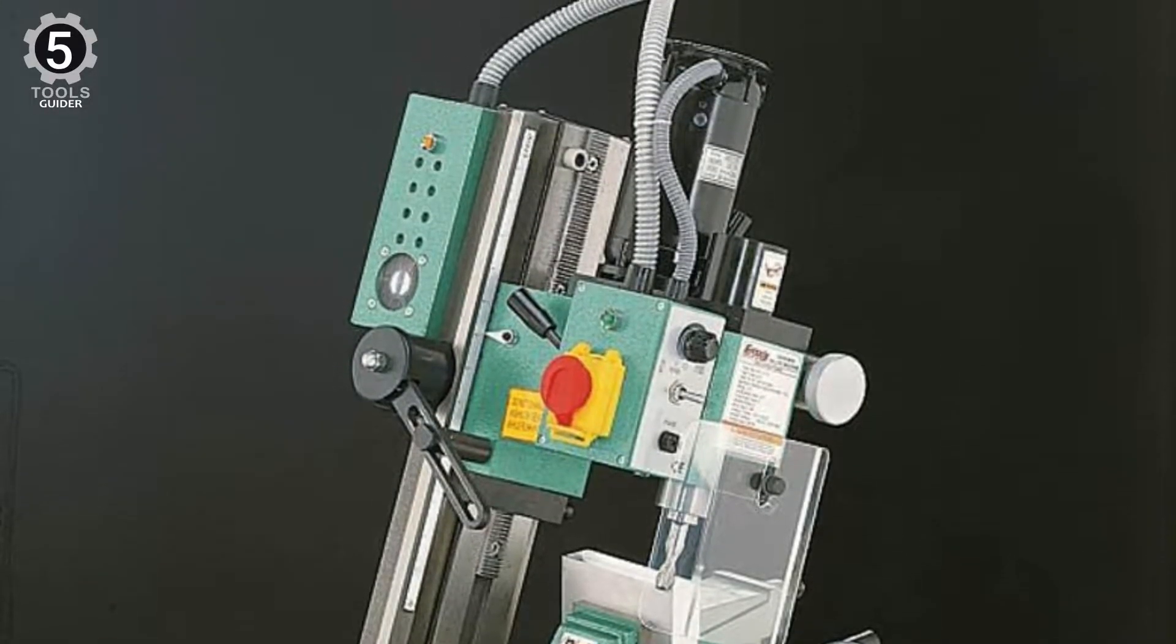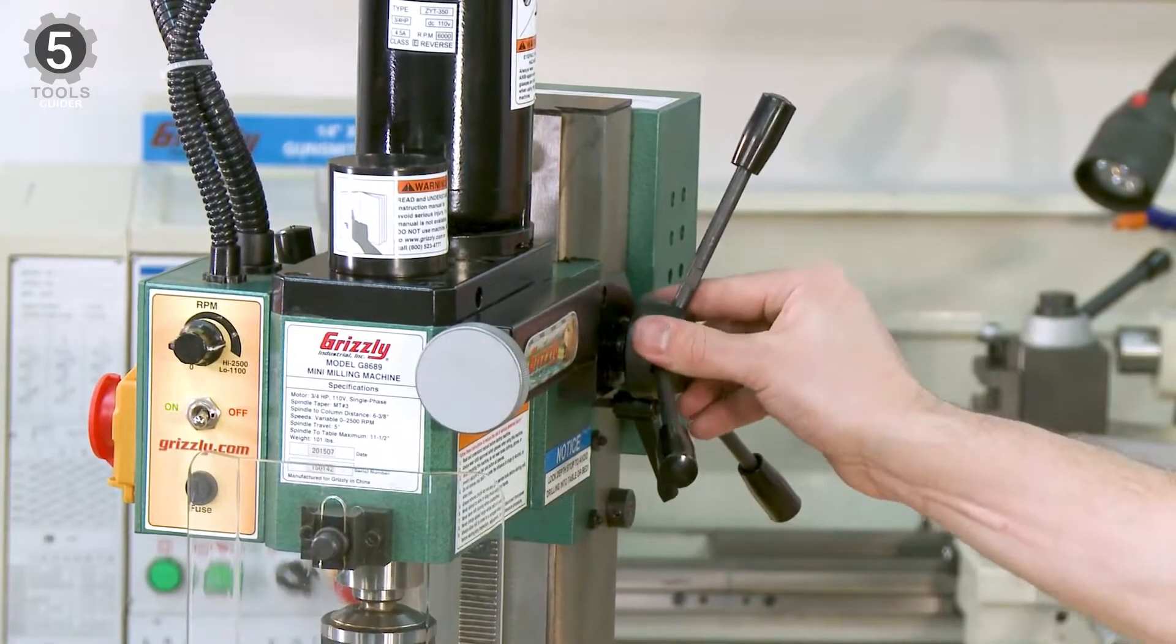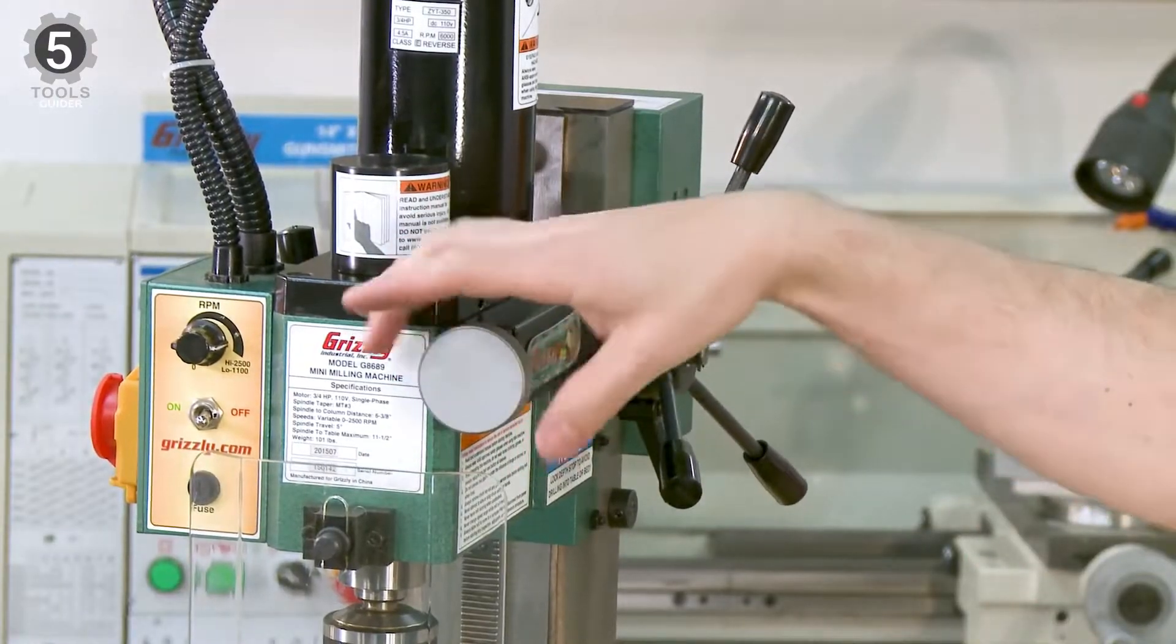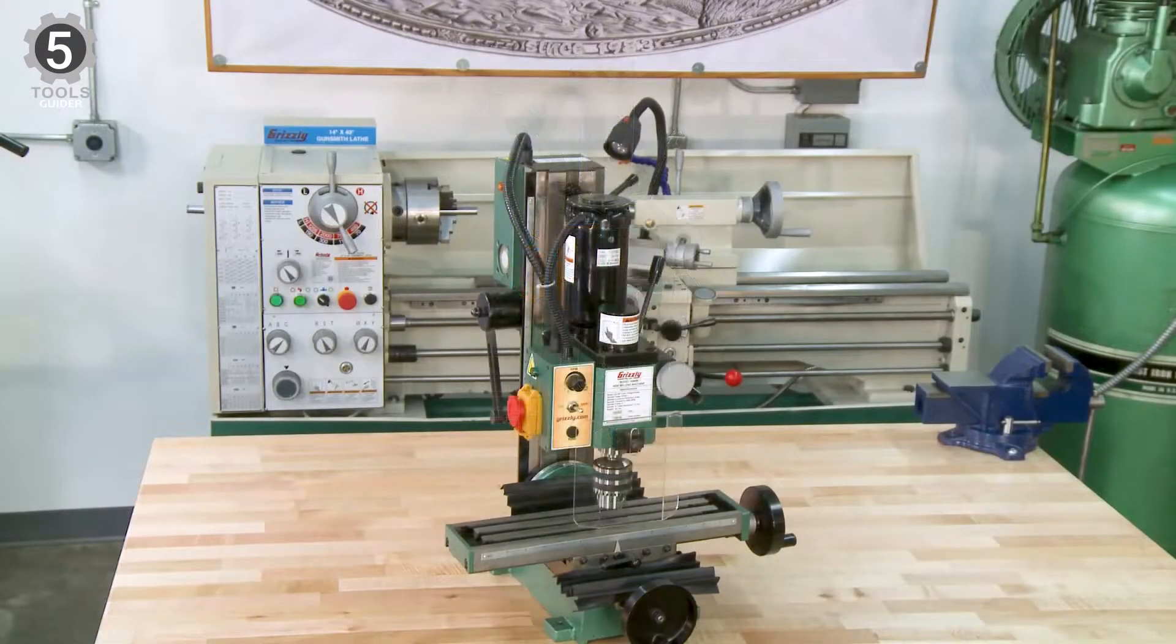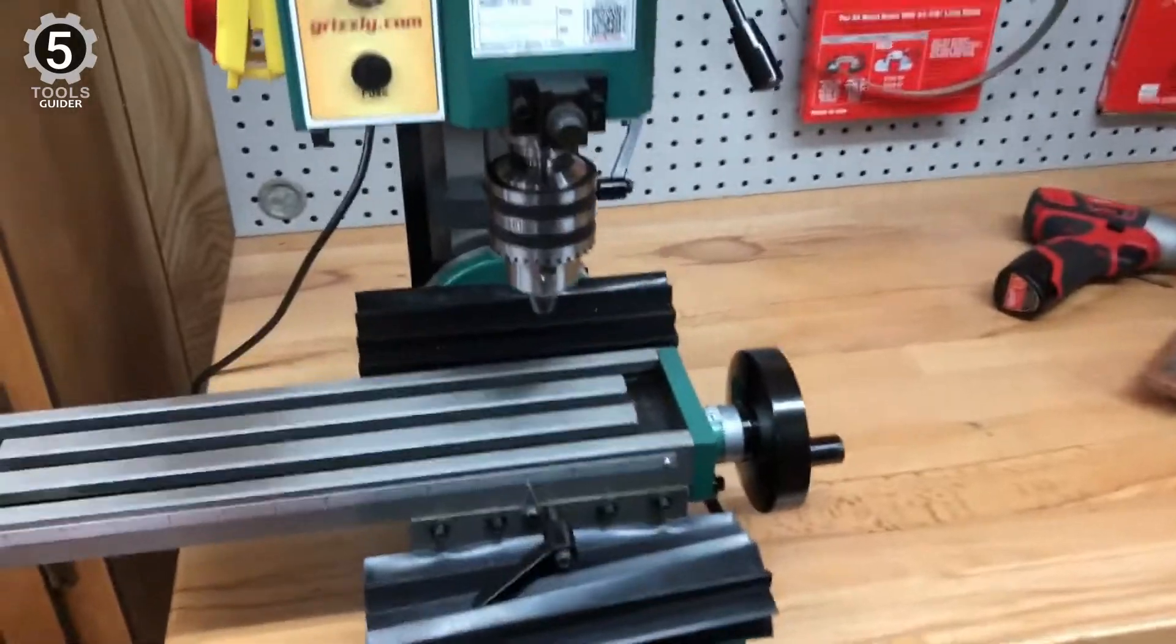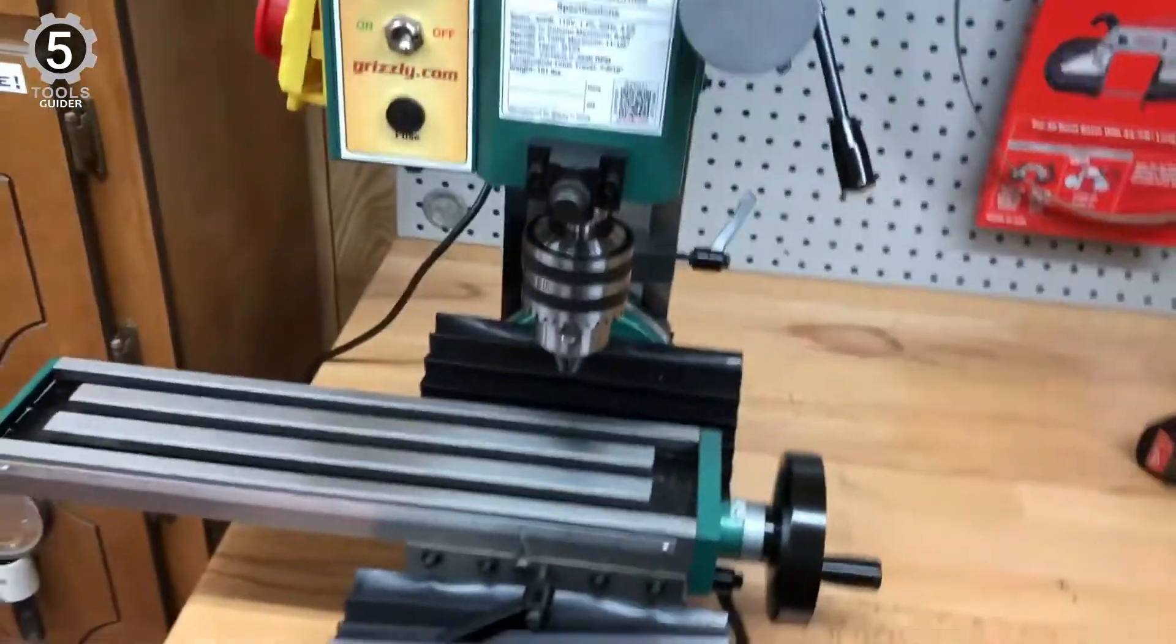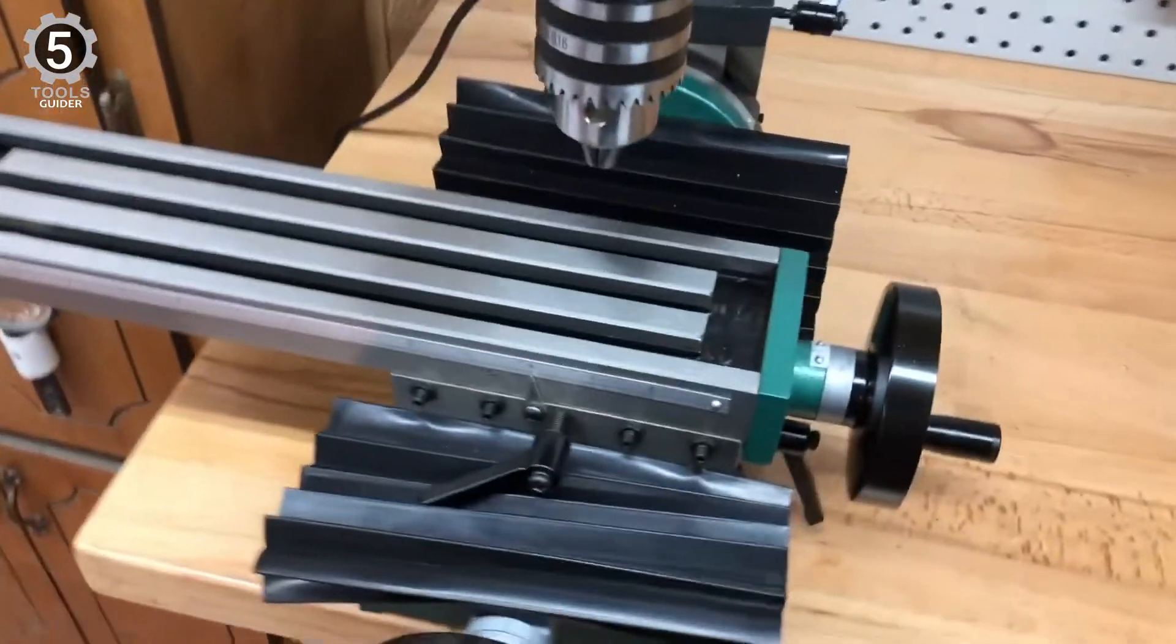It has a lot in common with the Grizzly, with only minor differences like half an inch of headstock travel distance, with a total of 7 on the Z-axis. It's also 6 pounds lighter than the G8689 at 143LB frame.